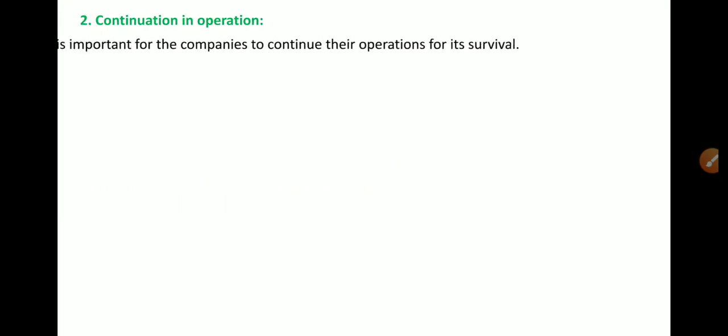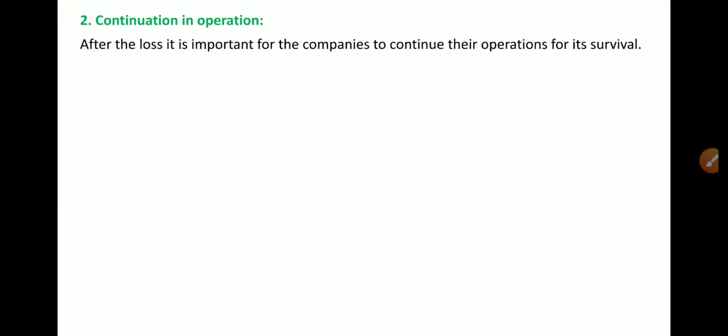The second post-loss objective is continuation of operations. After a loss, it is important for companies to continue their operations for survival. Even if the risk has happened and losses have been incurred, the organization has to survive. For the sake of survival, the company has to continue with its operations. If they stop their activities, major losses will occur and the company will wind up. So in order to mitigate larger risk, the company has to retain certain activities.